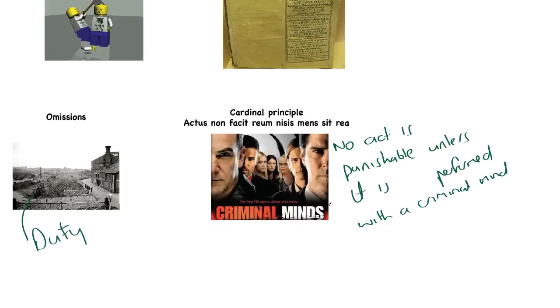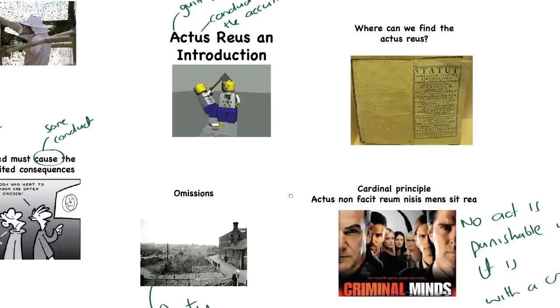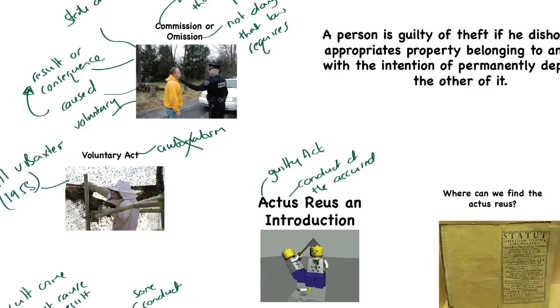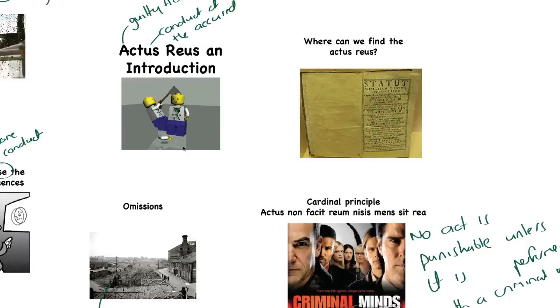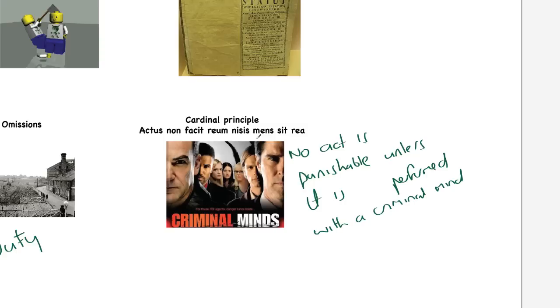We've talked about this concept of actus reus and all the ways in which actus reus presents itself. The fact that it has to be a state of affairs, results or consequence, it's got to be caused by the defendant and it has to be voluntary. All of that, even if it's present, is not punishable. There's no liability unless the person has a criminal mind. We know full well from what we did in the last video that we were talking about mens rea. We'll come back to mens rea when we look at the mens rea in our video.